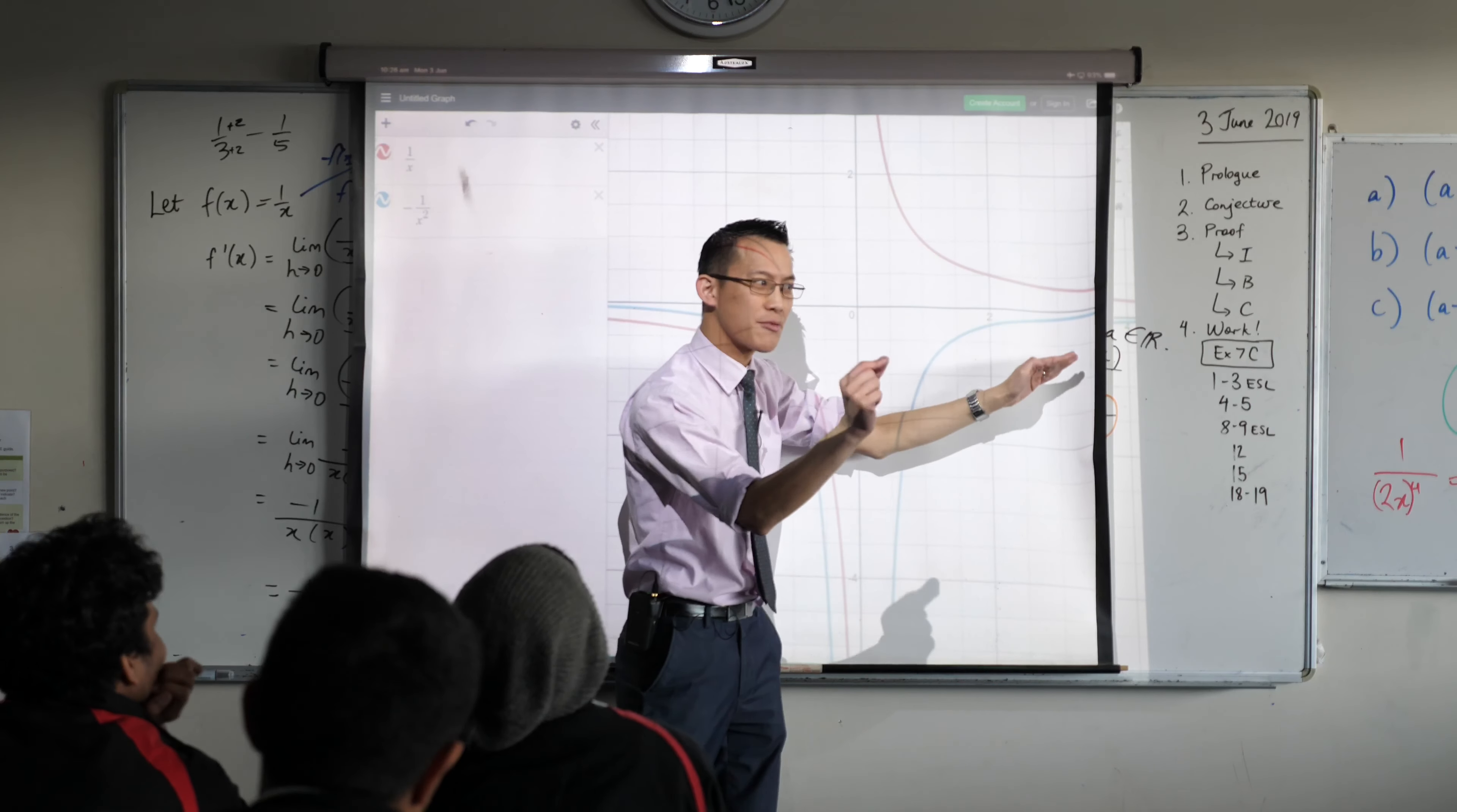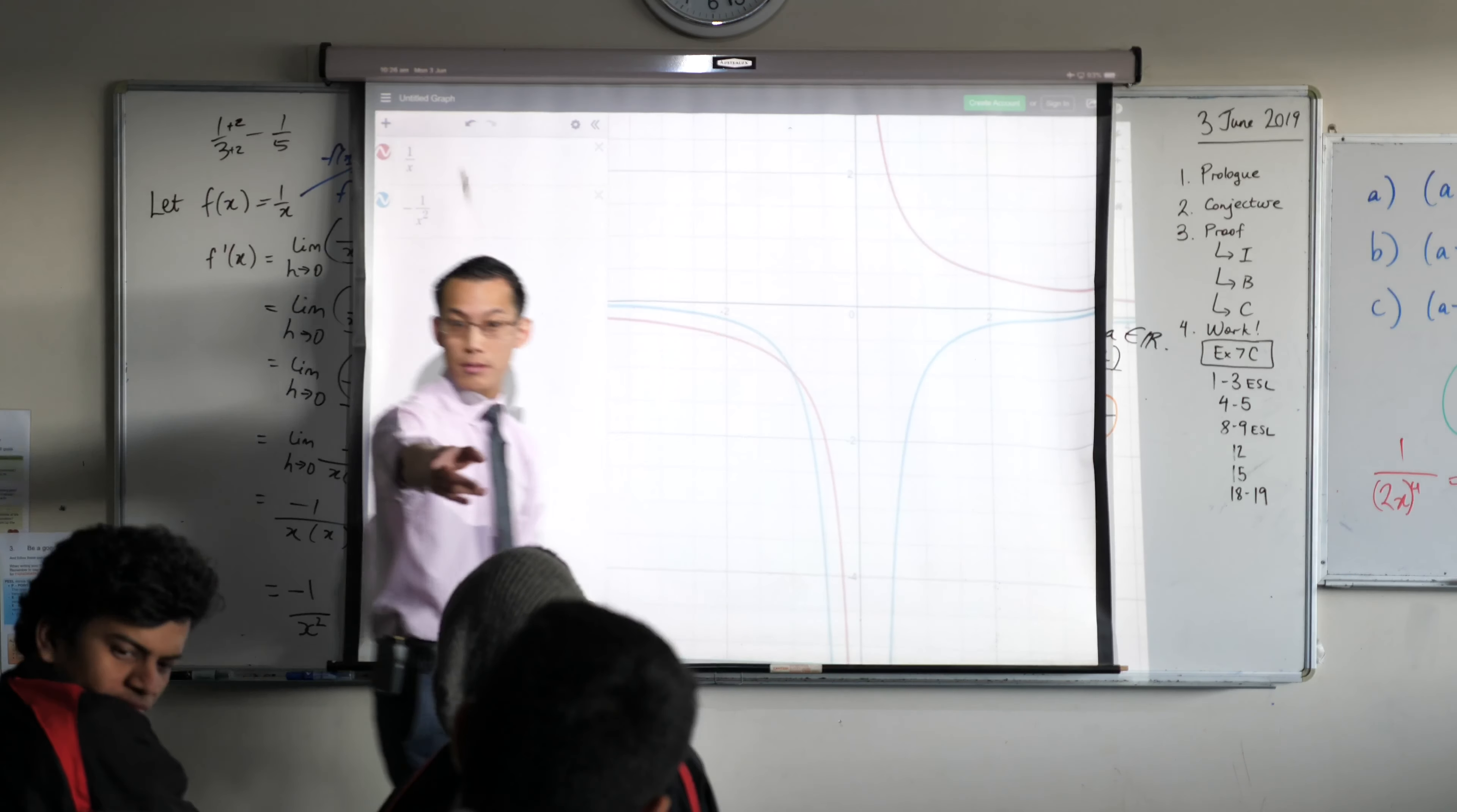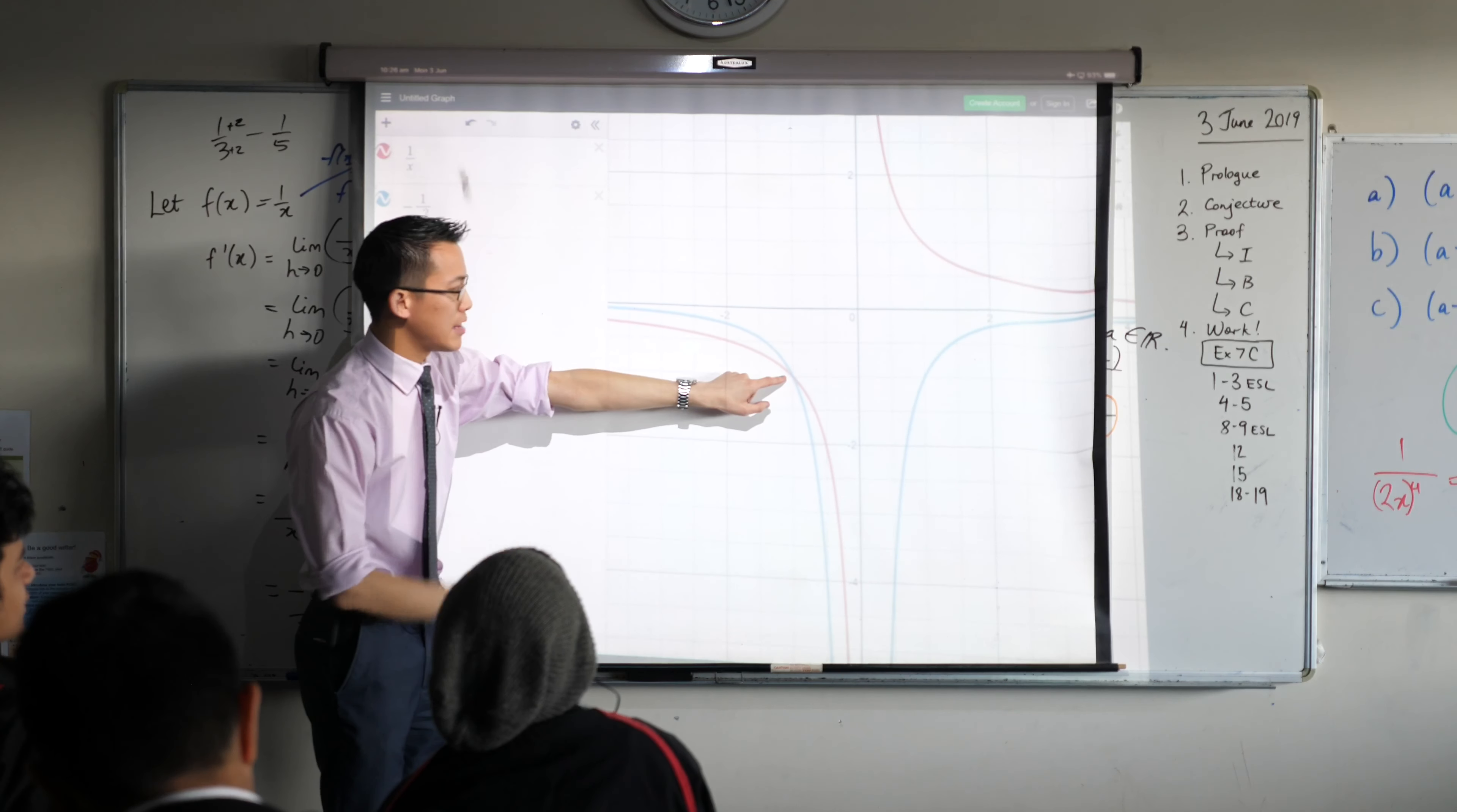Why doesn't it ever turn? Because it's an asymptote. See, this gradient function, it gets close to zero but it never actually gets to zero. So yeah, which point are you talking about? This point here? Ah, good question. What does that mean?